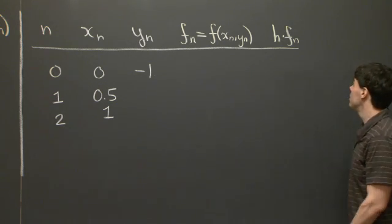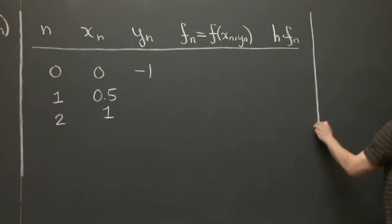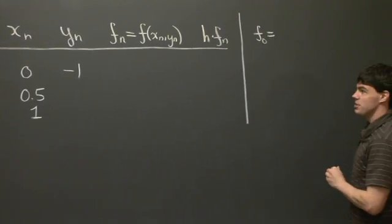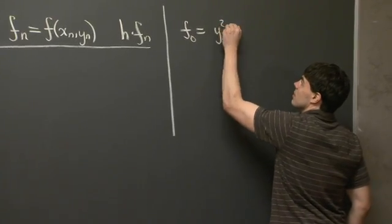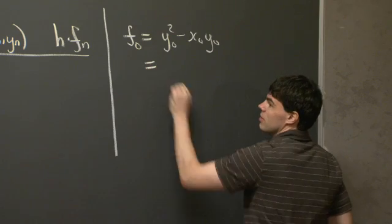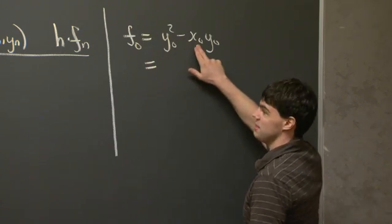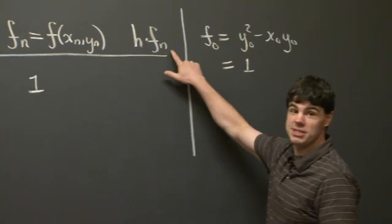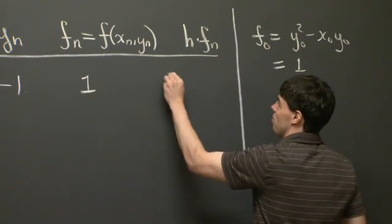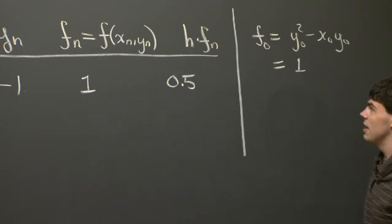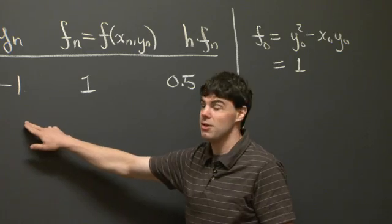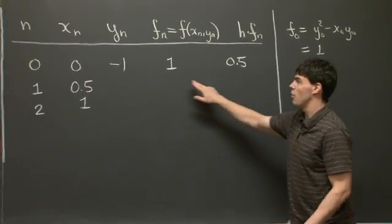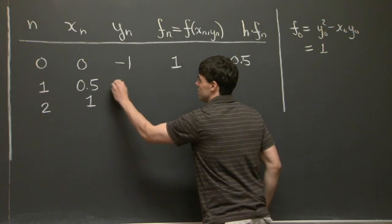And now for f_n, I'll just use the side here. What's f_0 going to be? Well, it's going to be y_0² - x_0·y_0. So this gives us 1 and 0. So we can fill in 1 here, which means that h·f_0 is going to be 0.5. And now with h·f_n, we can fill in y_1. So y_1 is just going to be y_0 + 0.5. And y_0 is -1. So this is going to be -0.5.